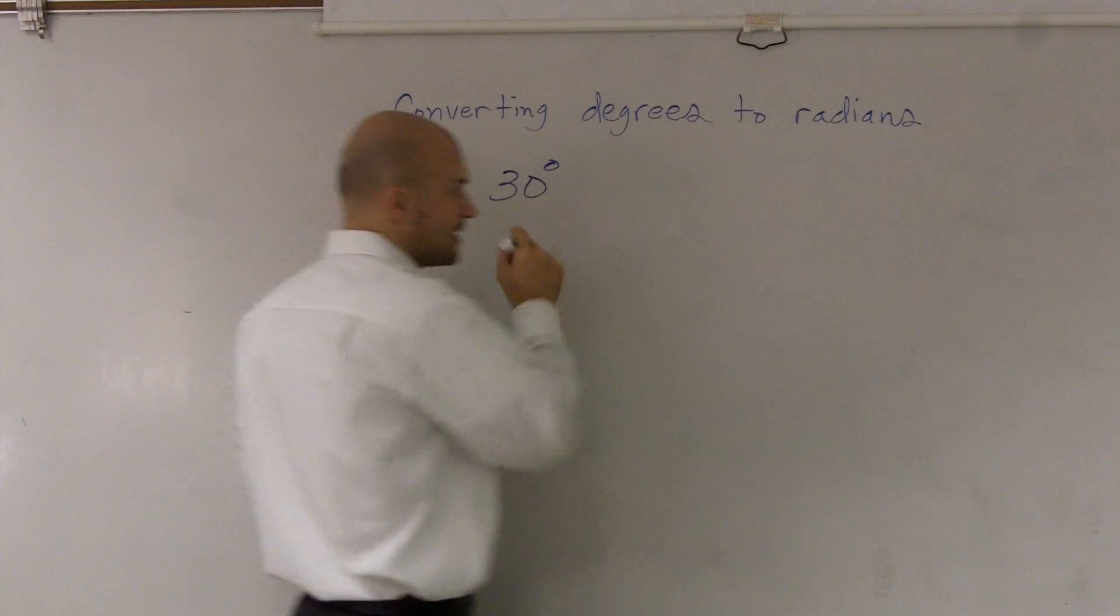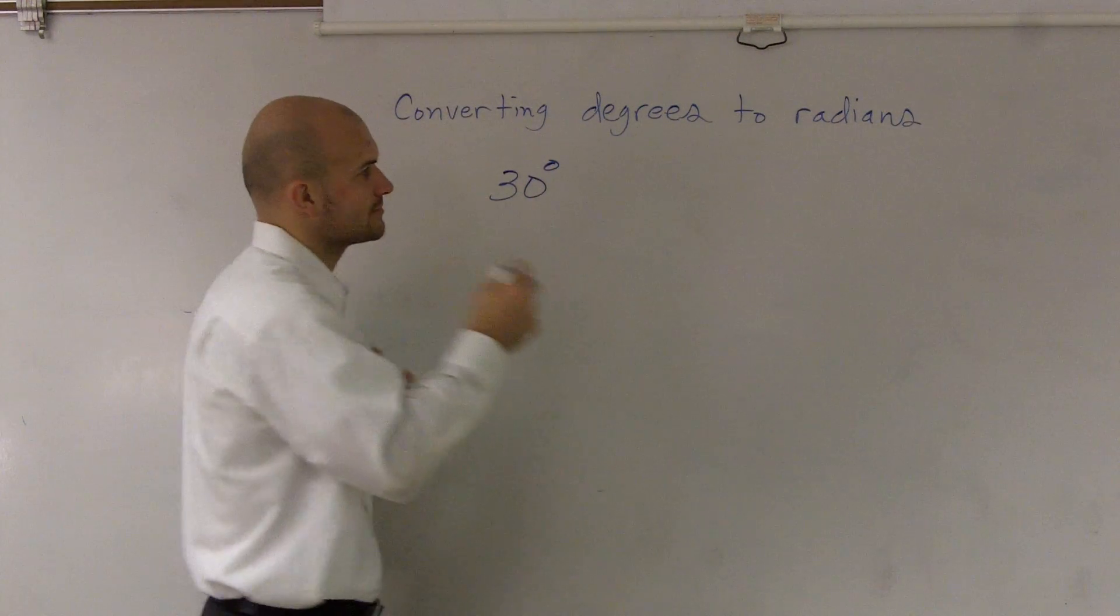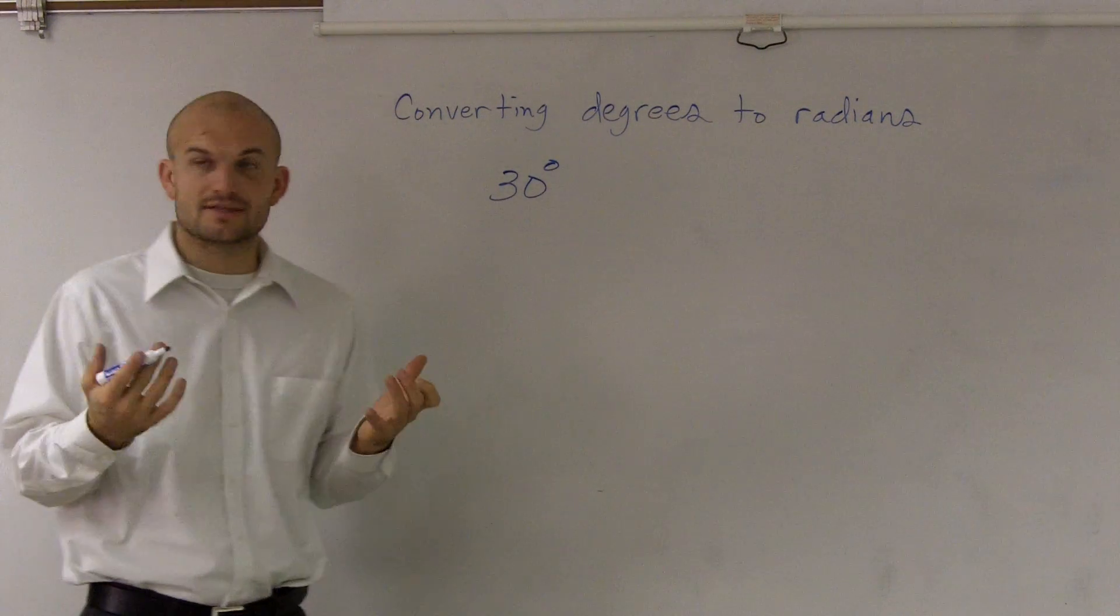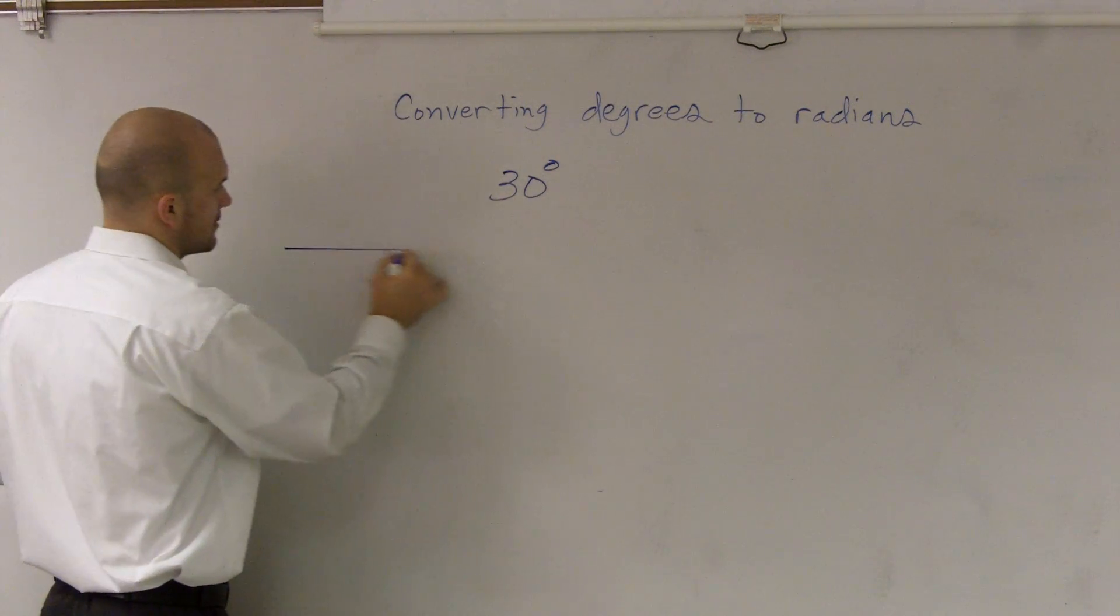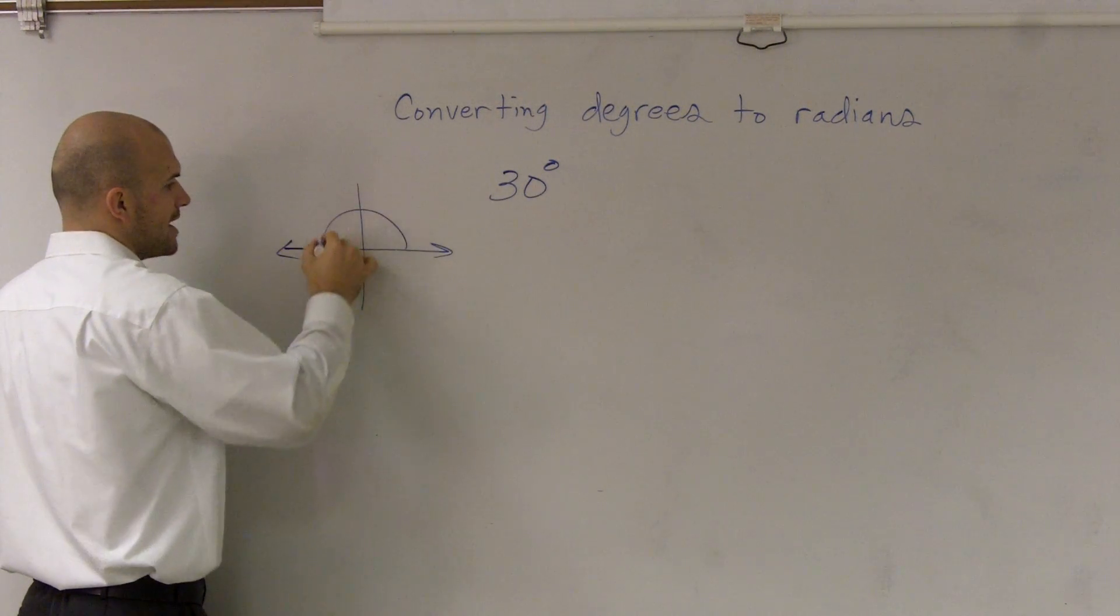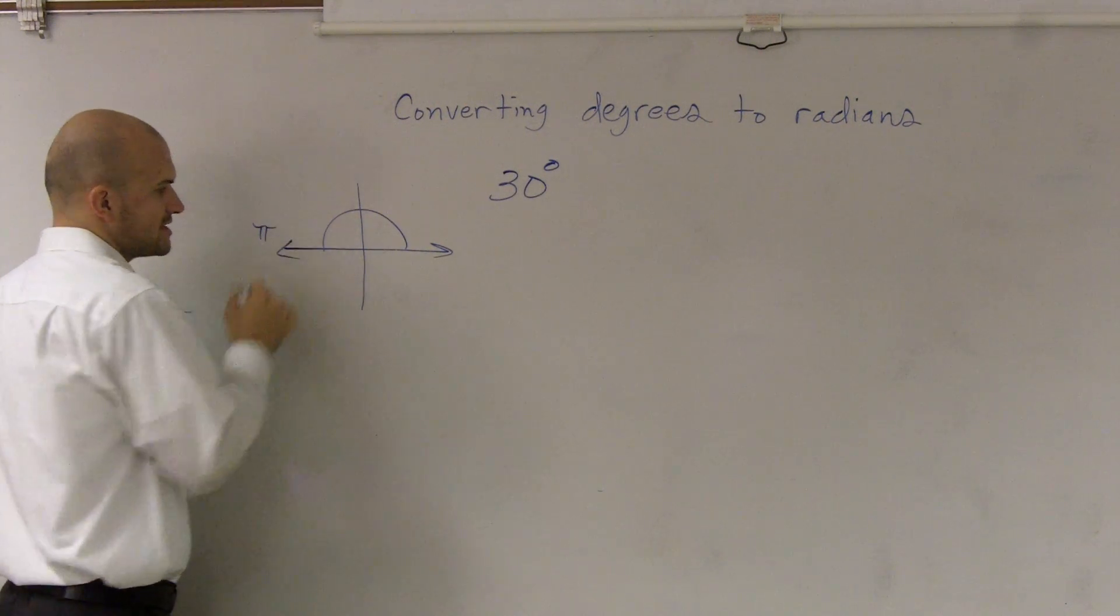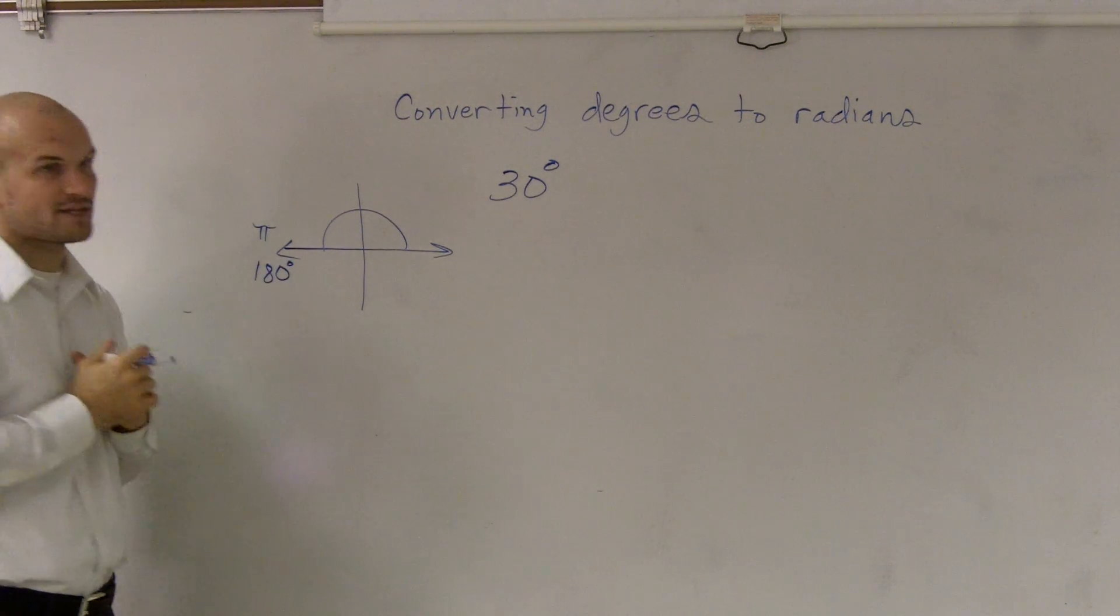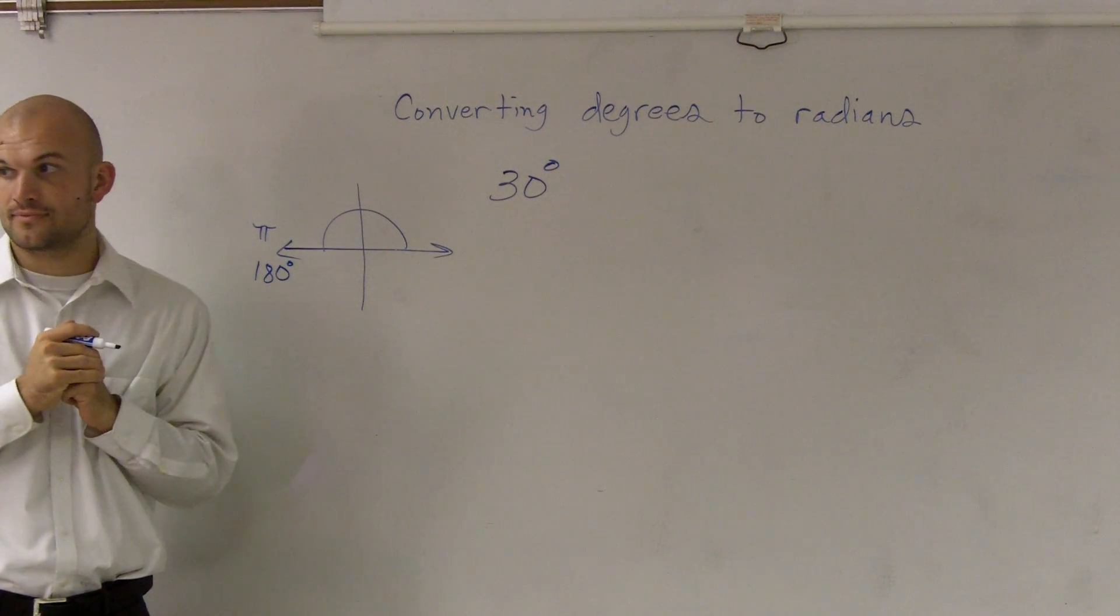So when I want to convert, remember degrees and radians have a similar thing where we say, well, halfway around we learned is pi. But we also know from earlier that's the same thing as 180, right?